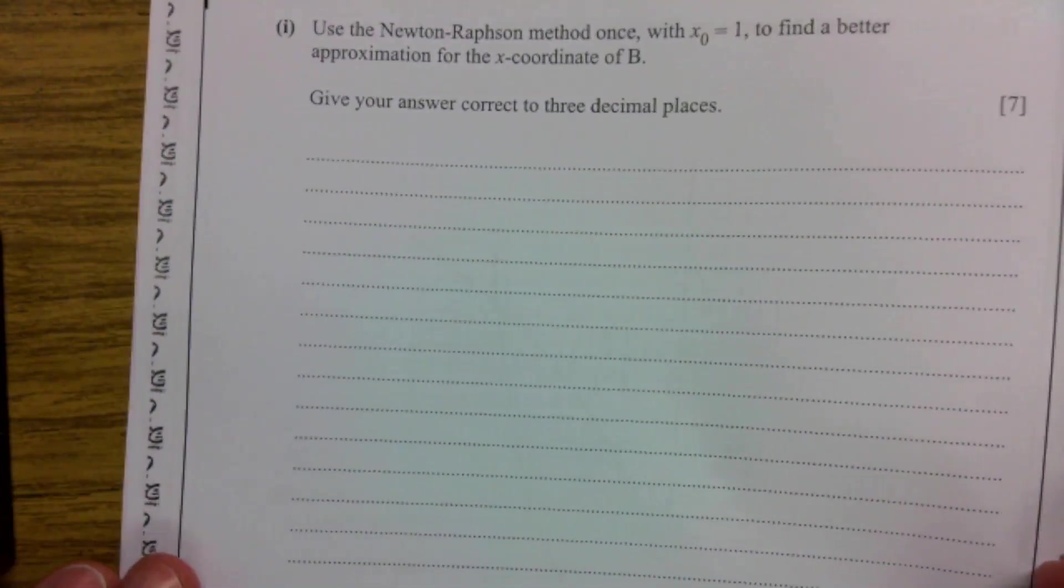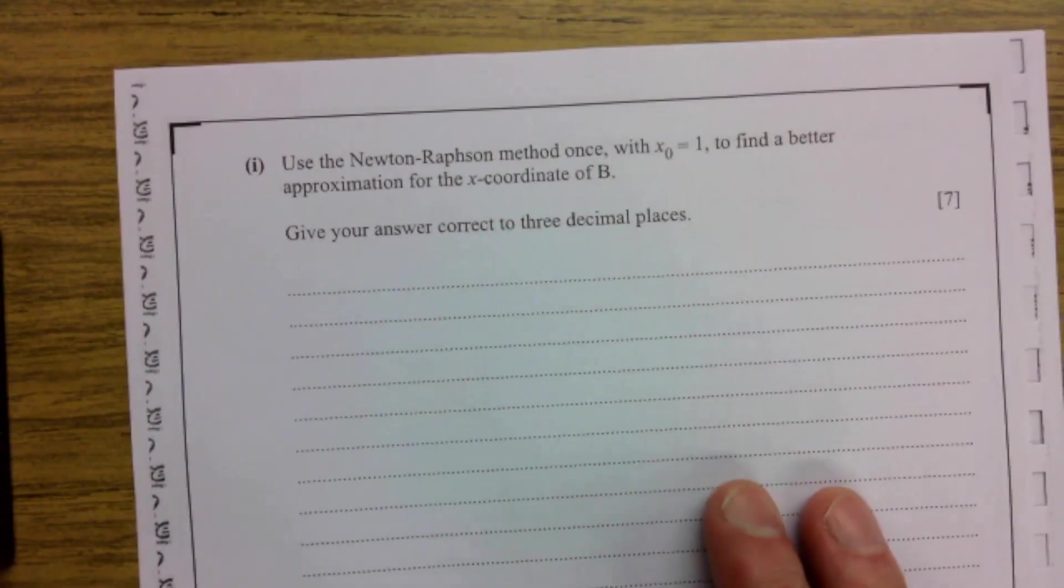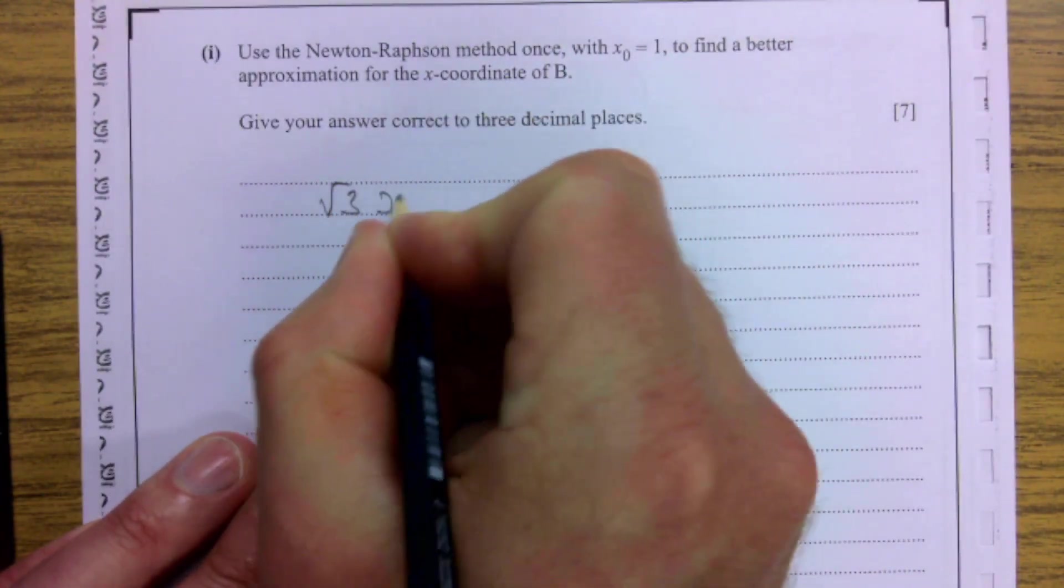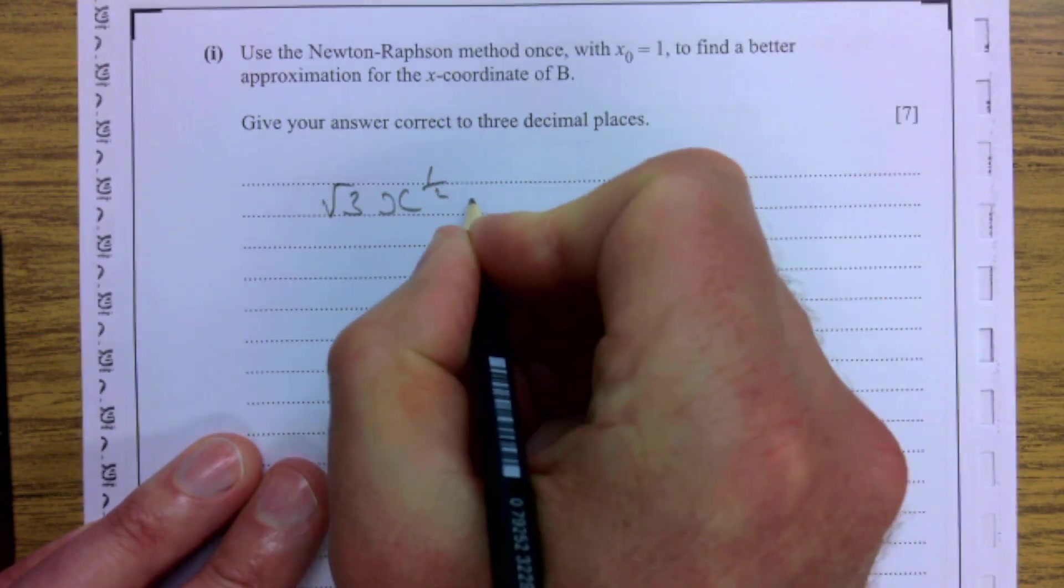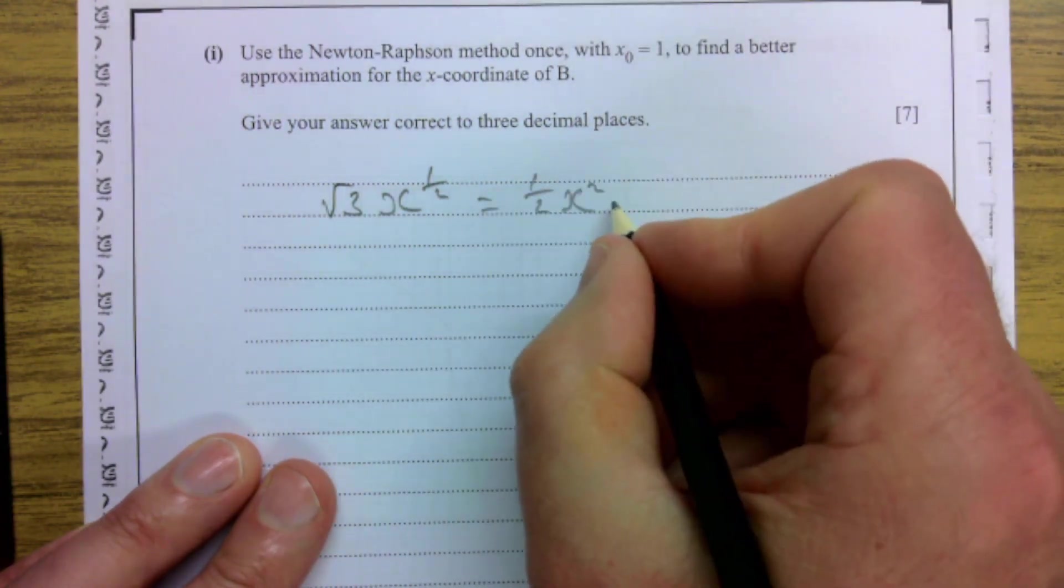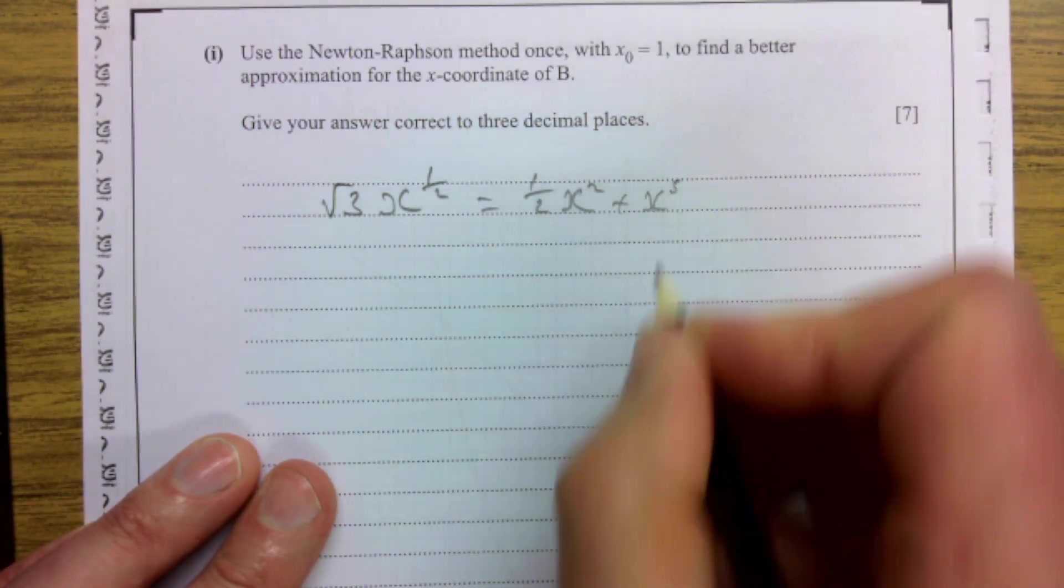And we're going to put those two equations equal to each other and then we'll try and work from there. So let's see, our function is, I think it's √3 x^(1/2). And I'm letting that equal to (1/2)x² + x⁵.